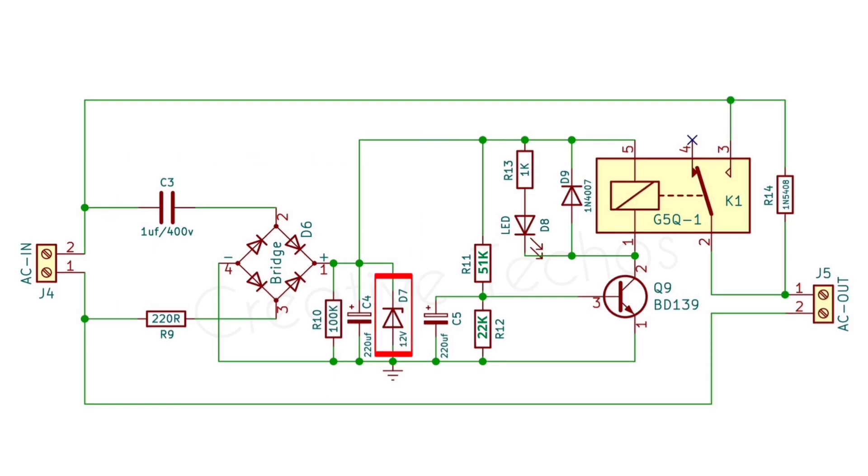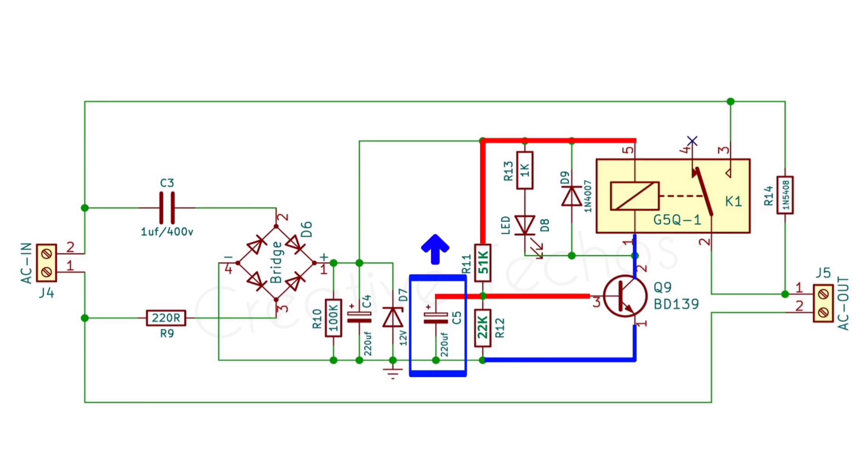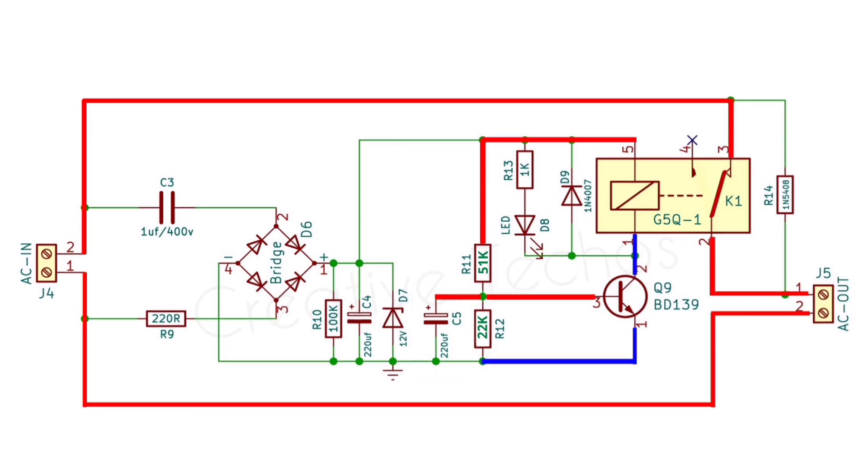This 12 volt zener diode stabilizes the DC voltage at 12 volts. This 220 microfarad capacitor gets charged slowly through this 51 kiloohm resistor, adding a delay of a second. And when the capacitor gets fully charged, the base of the transistor gets sufficient current and turns on the negative voltage to the relay coil. Now the relay turns on and the load at output gets full current directly from the input by bypassing the current limiting resistor.